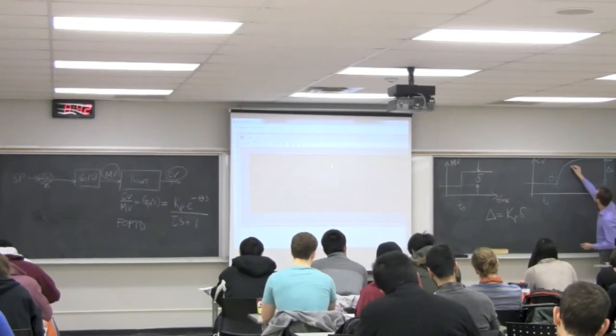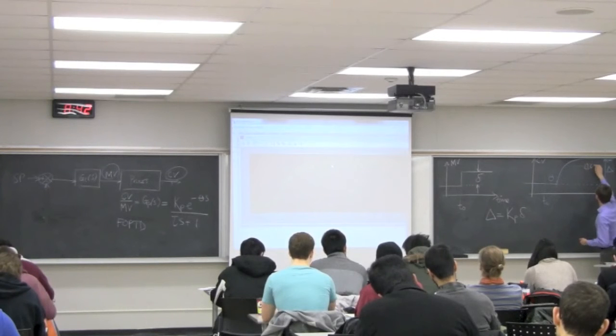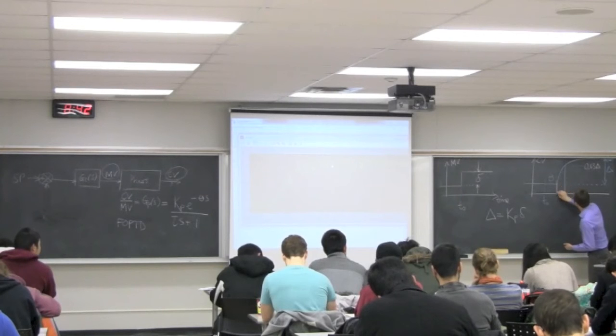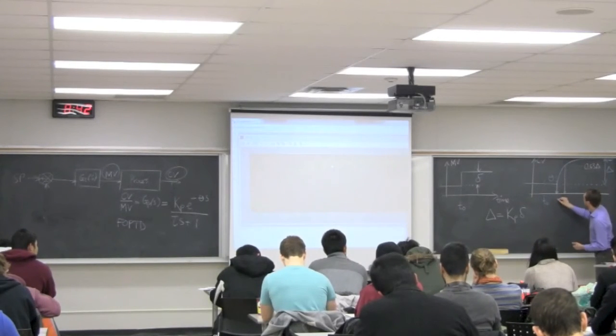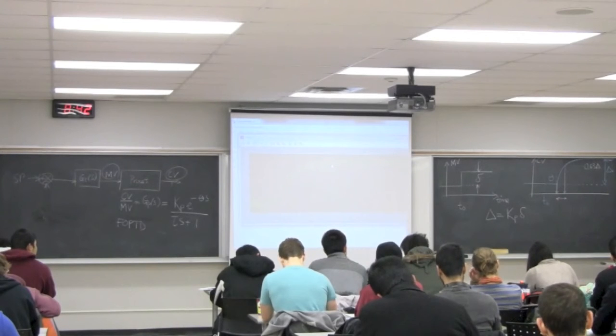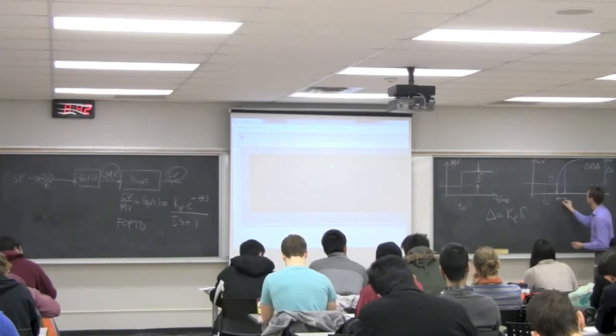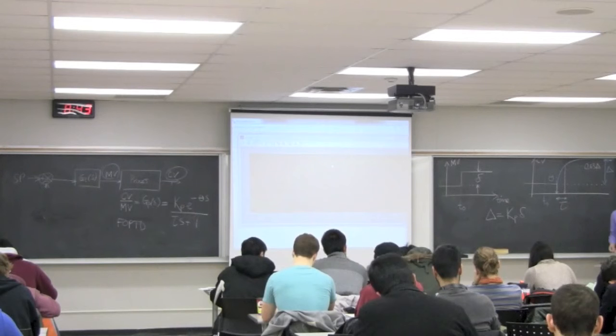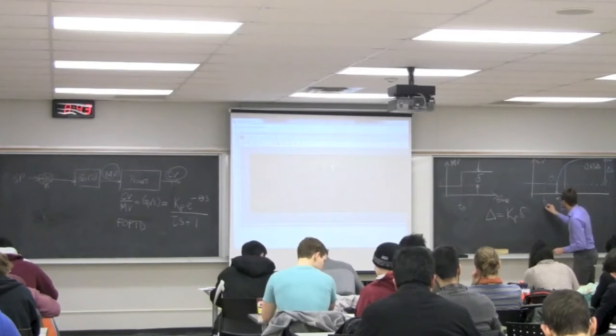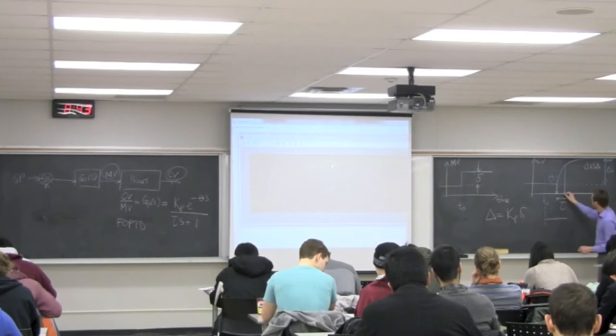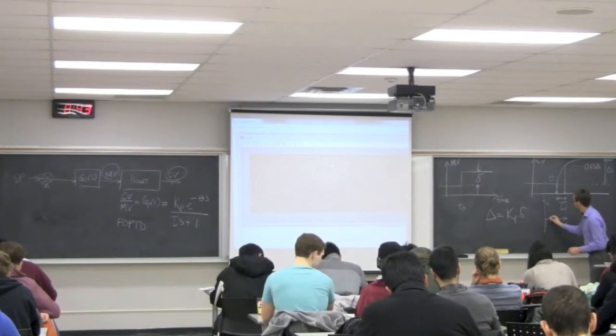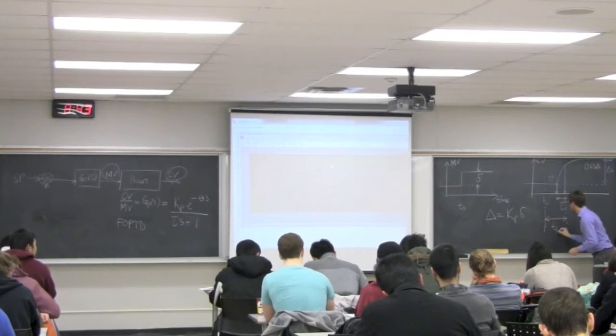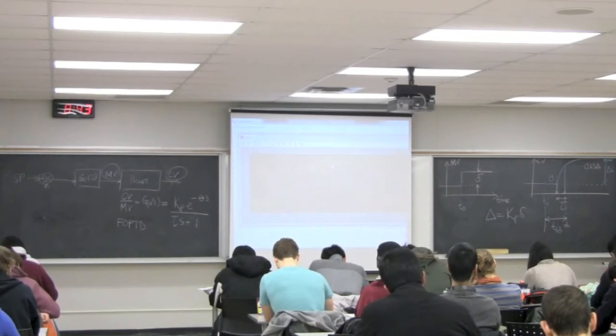For that duration of time theta, I will see actually no change in CV. There's a pure dead time in my system, and then this rises in the first-order manner. That total rise, this distance here, we call delta. Capital delta is the total rise time. We said last time that delta, capital delta, is equal to Kp times lowercase delta. Lowercase delta, you recall, was the amount by which we increased the manipulated variable. The theta then is that pure time delay. If we wait 63% of delta, so 63% of delta would be somewhere around here. We drop this down, this distance over here from when it starts to rise, so when it reaches 63% of the rise time, that's my time constant tau.